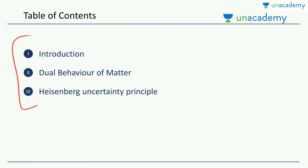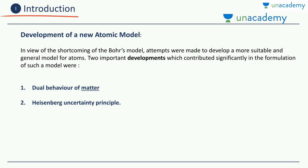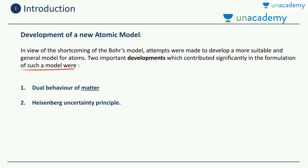I'll introduce you to the chapter first of all, then we'll see the first development, which is the dual behavior of matter, and secondly, the Heisenberg uncertainty principle. Why are these two developments necessary in our syllabus? We definitely need a new atomic model because of the drawbacks of the Bohr's model. In view of the shortcomings of the Bohr's model, attempts were made to develop a more suitable and more general model for atoms, not just for hydrogen. Bohr's model was applicable only for hydrogen and hydrogen-like atoms.